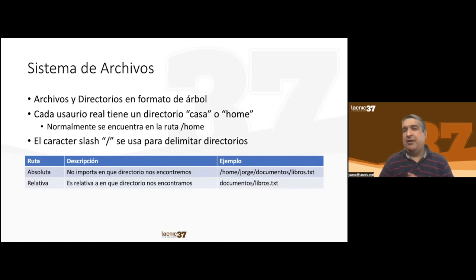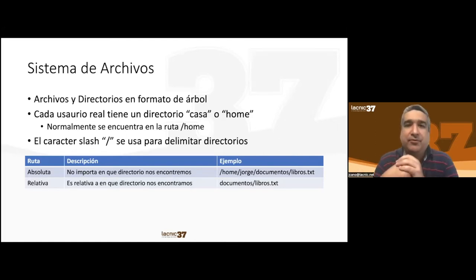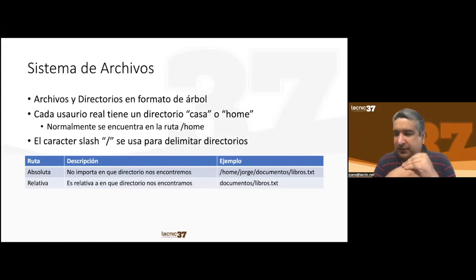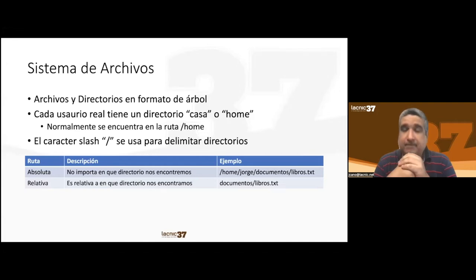There are two ways to specify paths: absolute — starting from root, listing all subdirectories divided by slashes until reaching a file — and relative — depending on where you currently are. For example, if you're in your home directory, a path without a leading slash like 'documents/books/libros' is a relative route equivalent to the absolute path from the home folder. So far, any questions or comments?